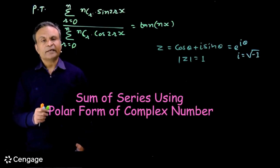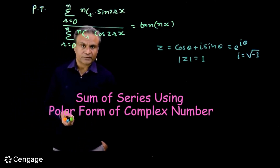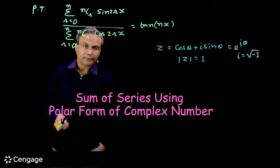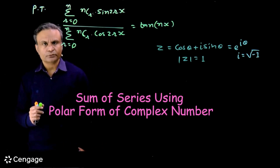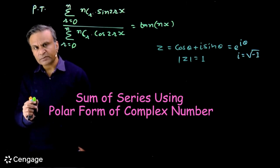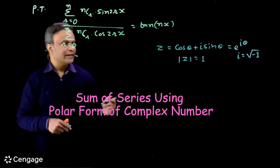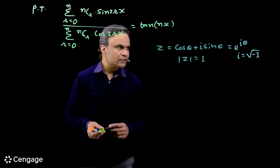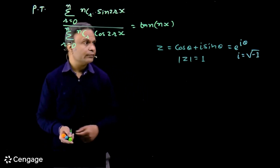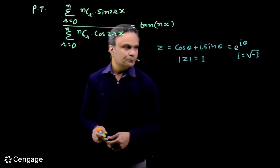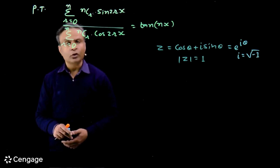Hello friends, we have different applications of polar form and Euler form of complex numbers. One interesting application is finding the sum of a series using this form. If complex number z has modulus 1, its polar form is z = cos θ + i·sin θ, and its Euler form is e^(iθ), where i is the imaginary number equal to the square root of minus 1.